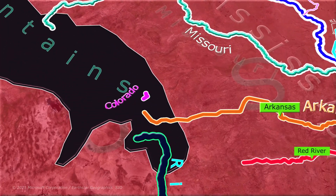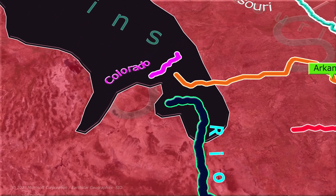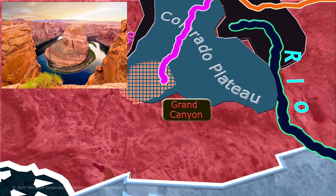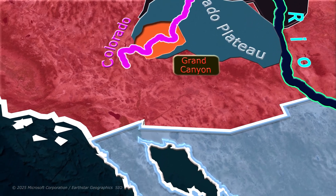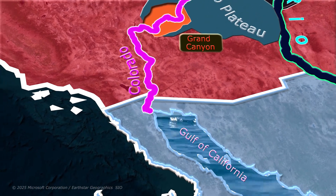Now let us study the Colorado River, which originates in the Rocky Mountains, flows through the Colorado Plateau, where it forms the Grand Canyon, and finally empties into the Gulf of California.